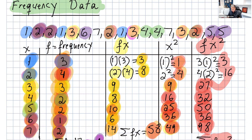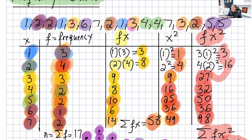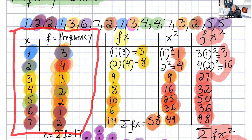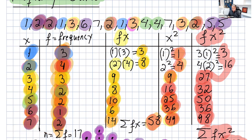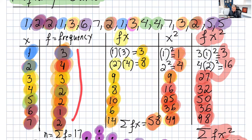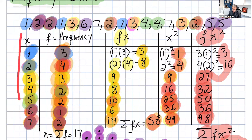So, what we can do is make a frequency table. That's how we can start and make the calculations easier and faster. Our data values, we call them x. The 1 is repeated 3 times, so the frequency of 1 is 3. 2 is repeated 4 times, so the frequency for 2 is 4. The frequency for 3 is 3, and so on. You write your numbers and the frequency for each number — you organize it this way.